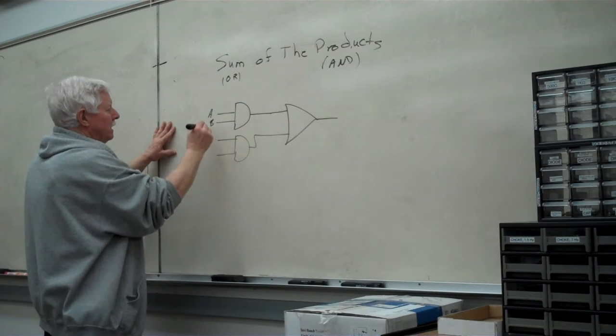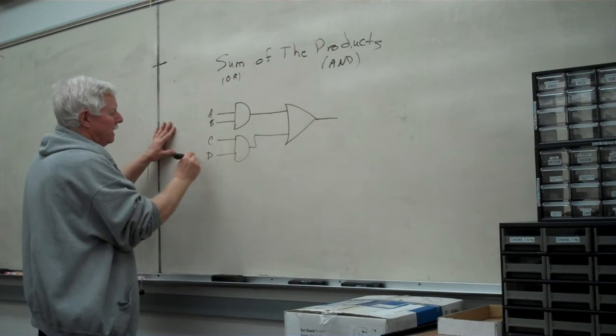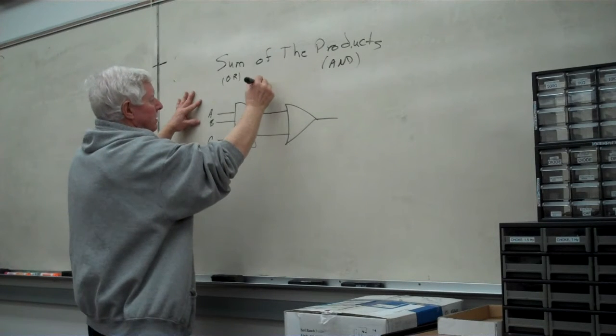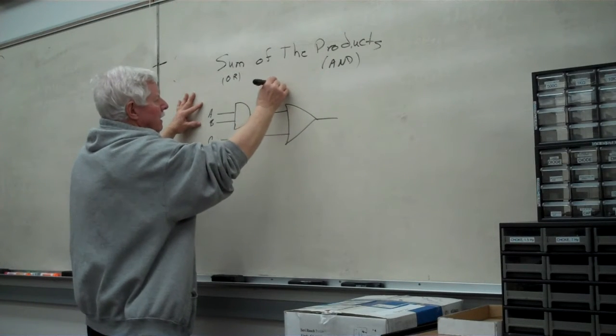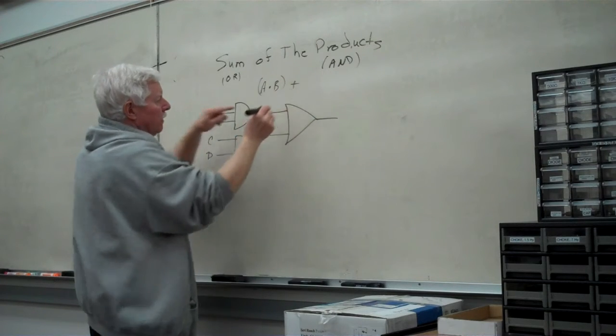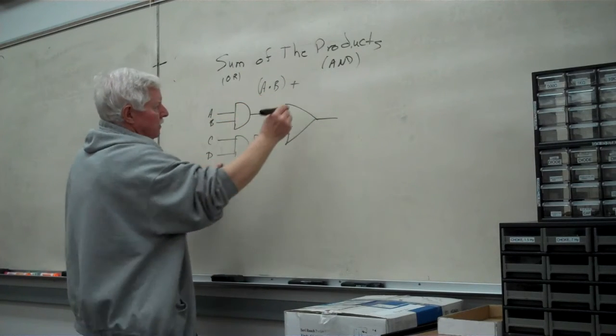There's A and B, C and D. So that when we look at this, we're actually going to go A and B ORed or sum with C and D.